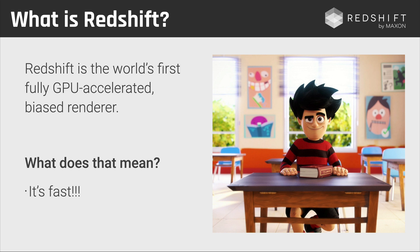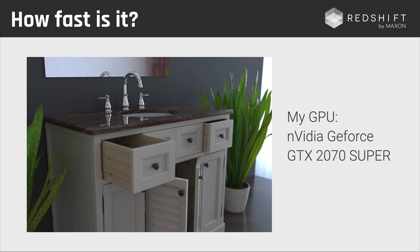So what does that mean? First of all, being a biased renderer means that Redshift is fast — and it's really fast. The second thing is that it's really flexible. Whenever you work with a sample-based renderer like Redshift, it's good to have full control over all the samples being shot into the scene. But if you want a quick render, you can switch to automatic mode and Redshift will do everything for you.